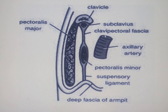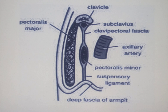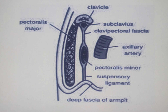That fascia is called the clavipectoral fascia. It is found between the subclavius and pectoralis minor muscles. There is a catch though: apart from extending between them, this fascia also covers these two muscles. So an exam question may ask which muscles are enclosed in the clavipectoral fascia — the answer is the subclavius and pectoralis minor. The pectoralis major is enclosed by the pectoral fascia, not the clavipectoral fascia.